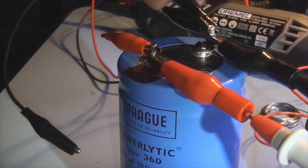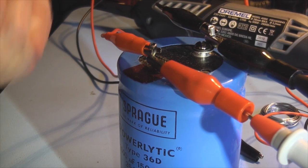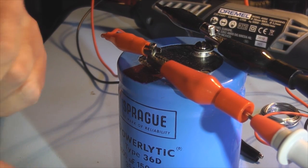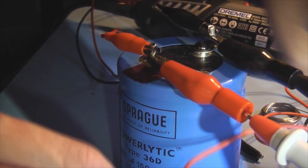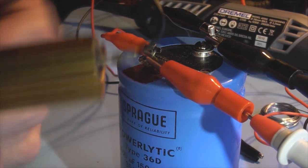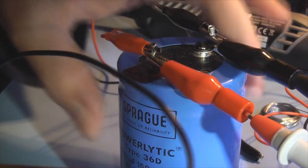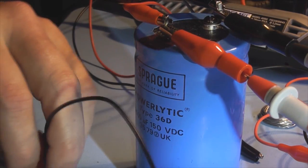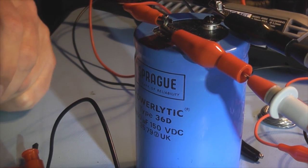Now the reason you do it with a bleed resistor or a capacitor discharge tool is to avoid that massive big dissipation of power. So what you're doing is basically bringing it down slowly, bringing the capacitor down much slower.